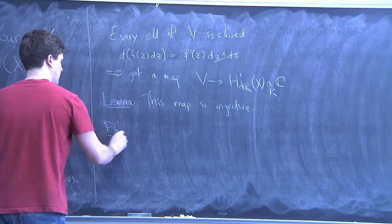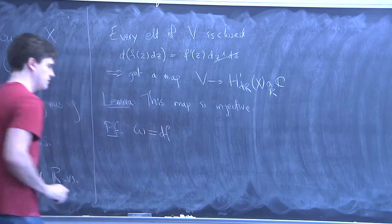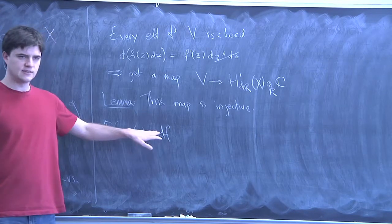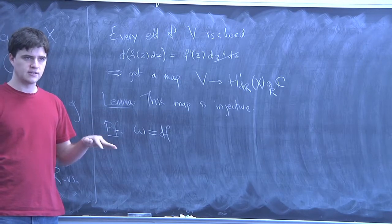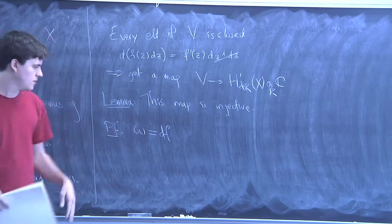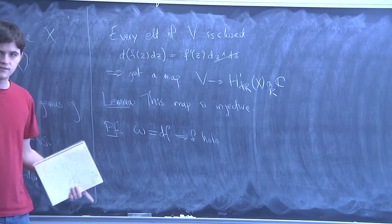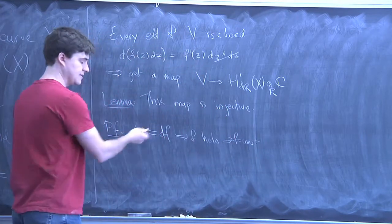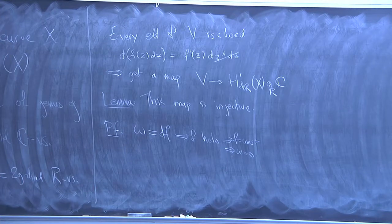For the proof: suppose you had some global holomorphic one-form ω that were exact, so ω = df for some smooth function f on X. Then df is a holomorphic one-form, so it has no d-bar component — by the Cauchy-Riemann equations, that's equivalent to saying f is holomorphic. So f is a holomorphic function defined on all of X, hence constant. So dω = 0. The only things that are coboundaries are just the zero form.